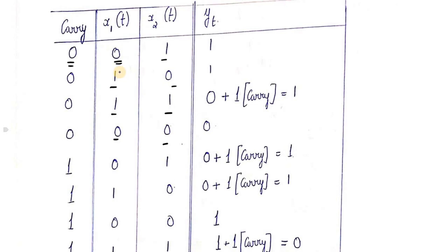Now if we don't have a carry and we add all the terms we get yt, because carry is definitely needed when calculating yt. So: 0,0 and 1 gives 1; 0,1 and 0 gives 1; 0,1 and 1 gives 0 with a carry of 1; 0,0 and 0 gives 0; 1,0,1 gives 0 with a carry of 1; and 1,1,0 gives 0 with a carry of 1.